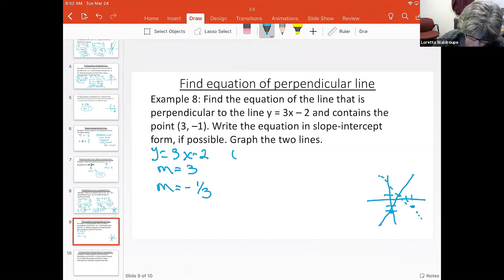We have the point (3, -1) and the m of negative one over three, and we can use our point slope form of the equation to find the equation of the line.